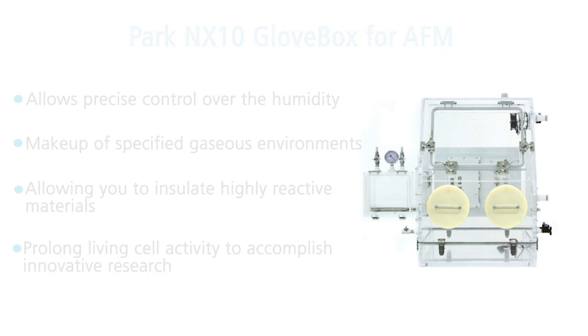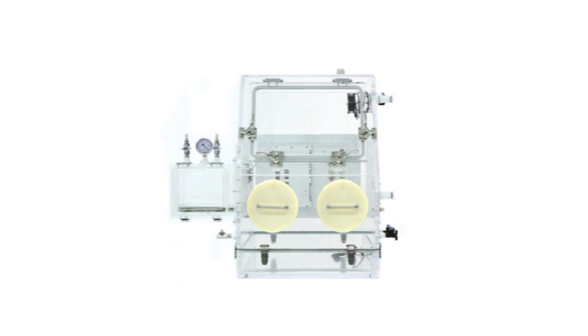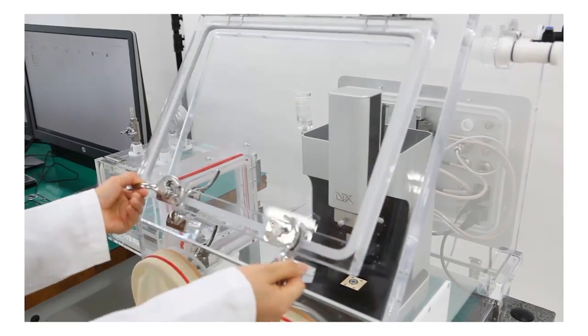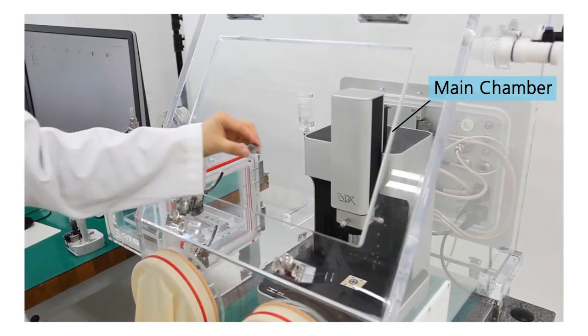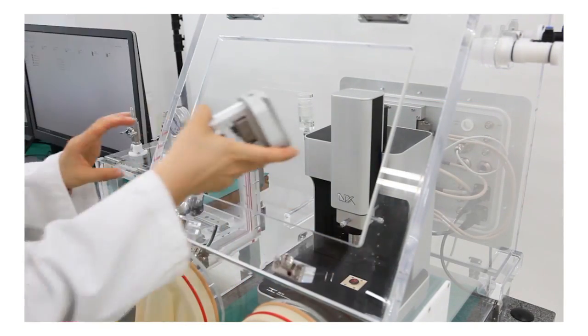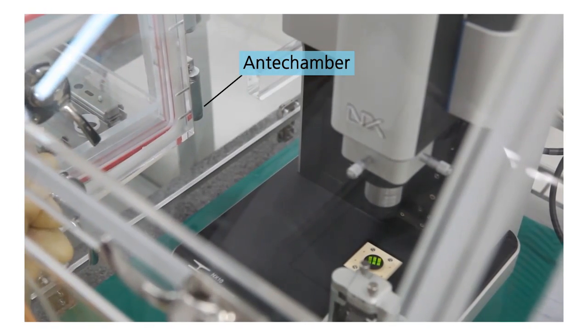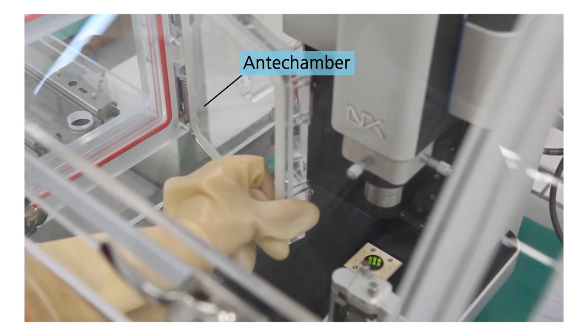Glovebox for PARC-NX10 is composed of a transparent acrylic main chamber and an antechamber attached to its left wall. The main chamber's door allows you to easily load samples for analysis or to replace the current PARC-NX10 AFM head. After the chamber environment has been adjusted, the antechamber's door can be used in the same way.